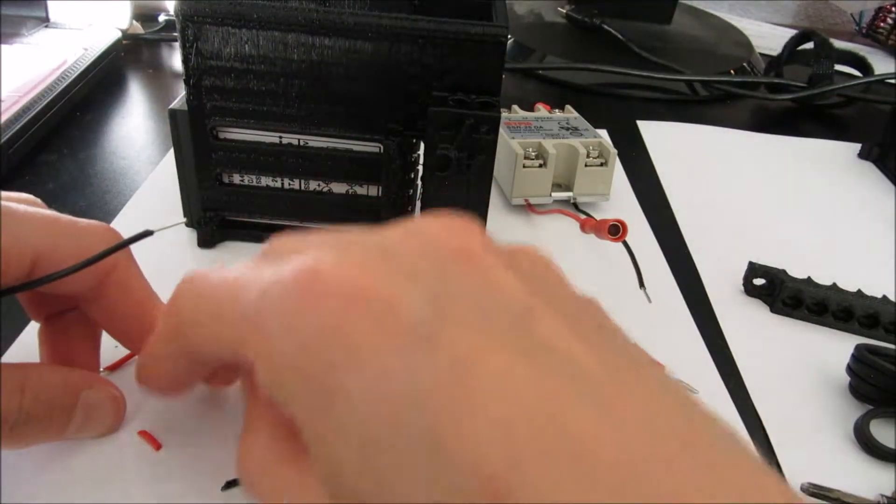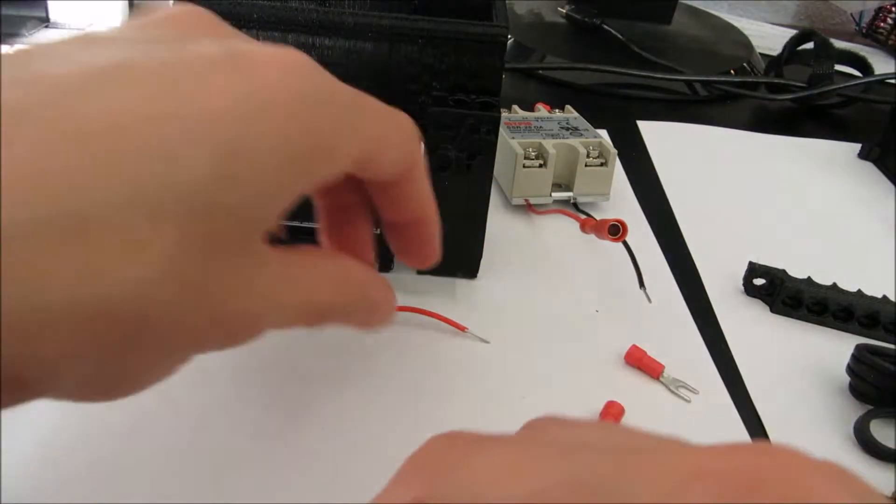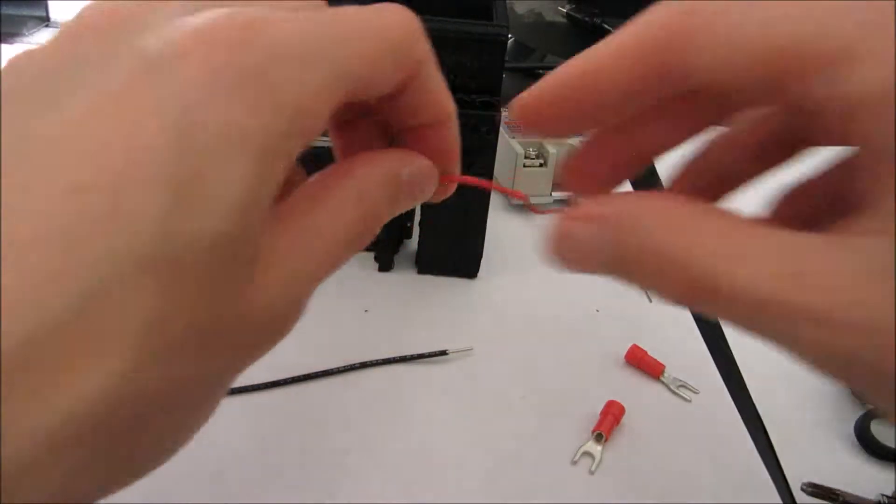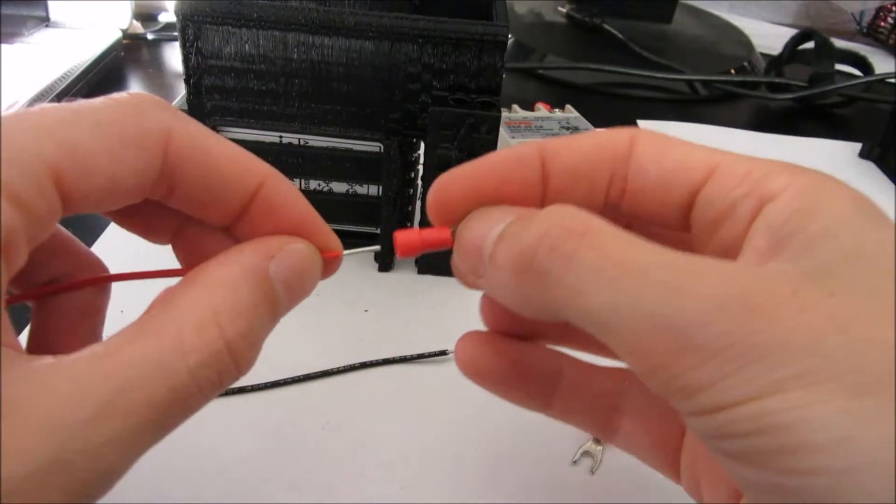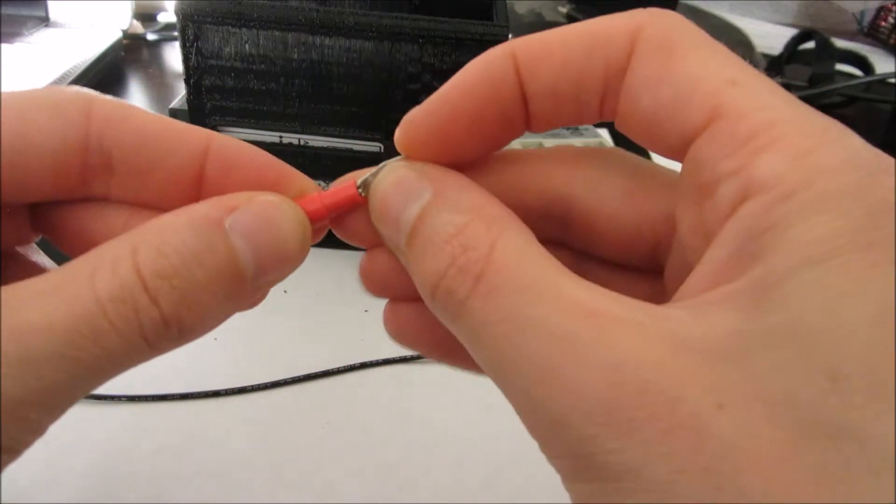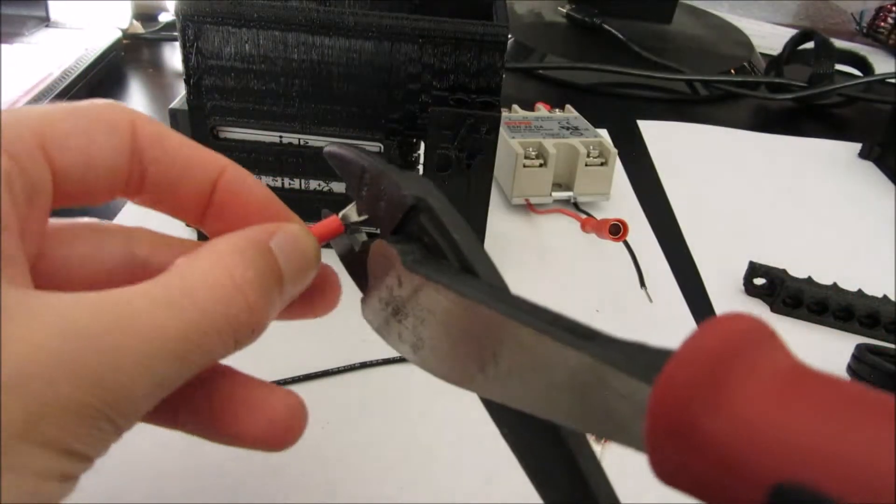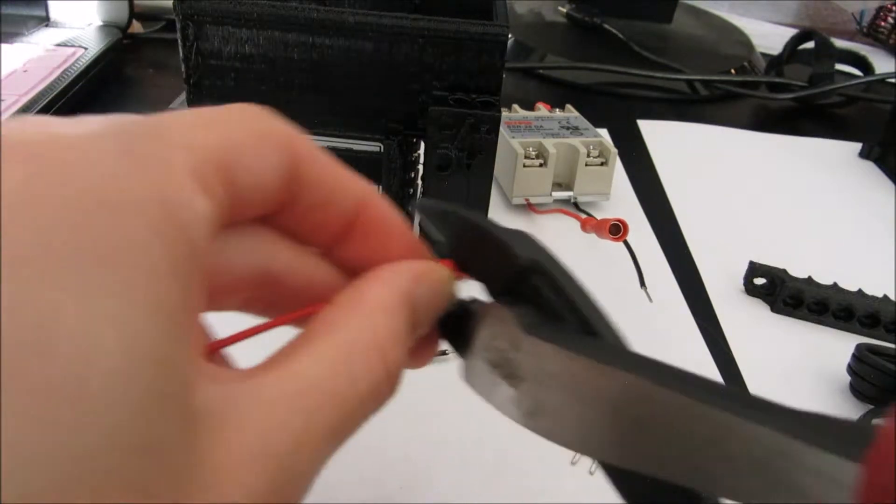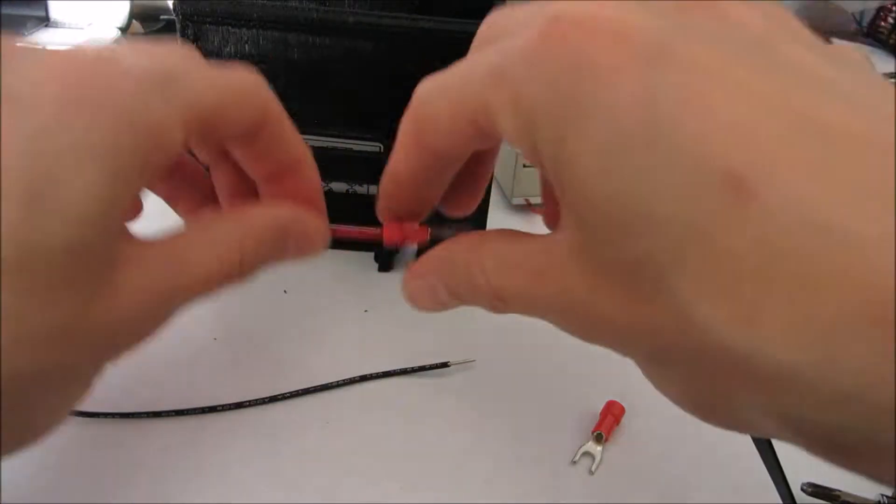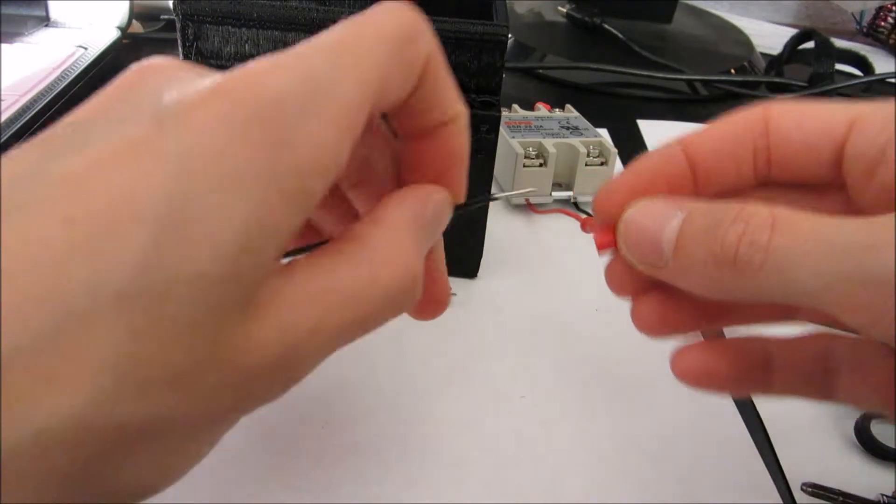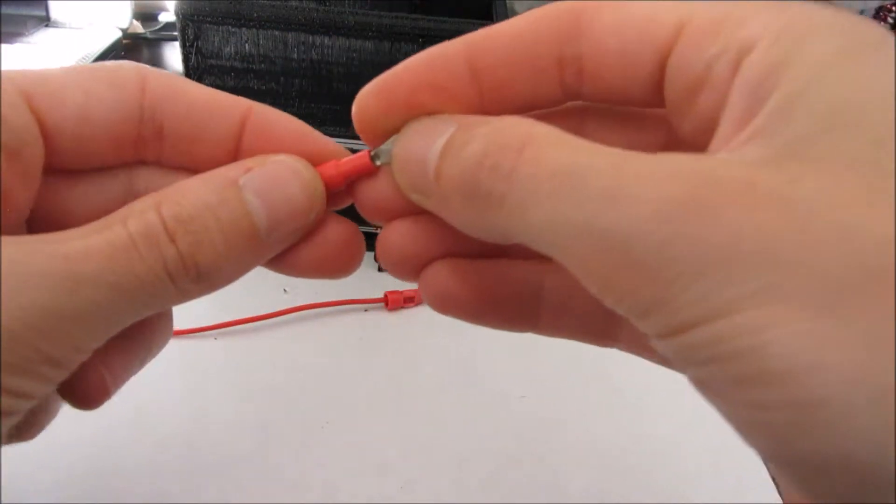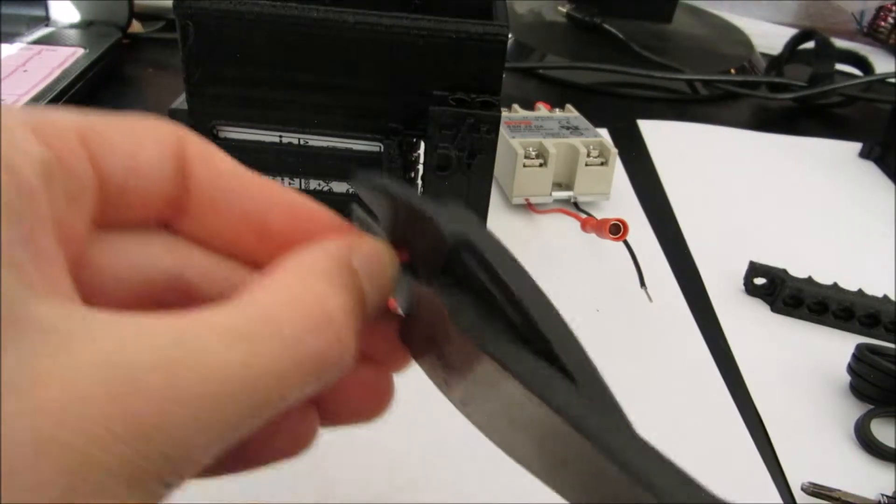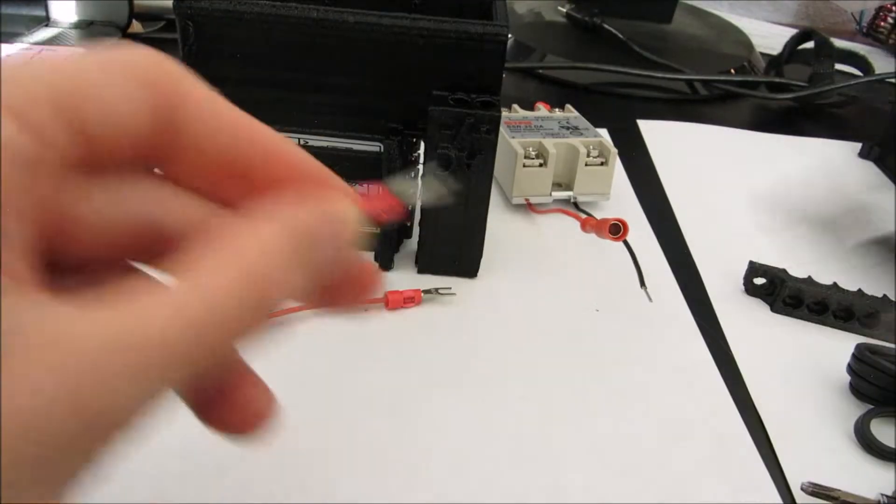Okay, just like so, get rid of the waste. Here we're going to crimp on a Y connector, one onto the red and one onto the black. We put the red Y connector on, push down really firmly so that one should feel snug. And the black, like so. Good.